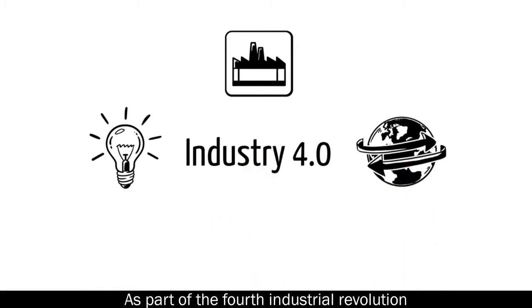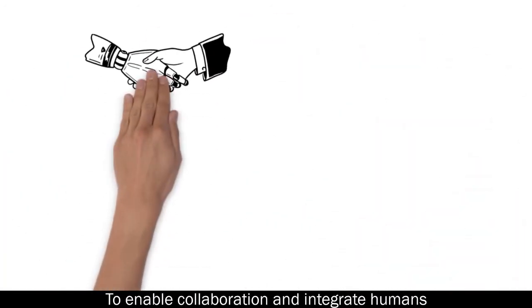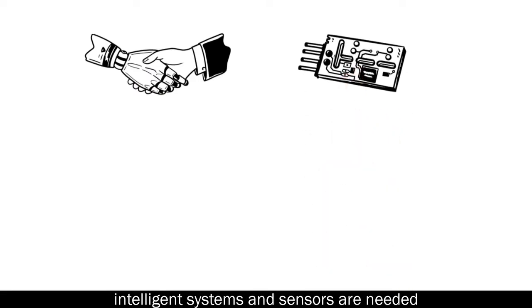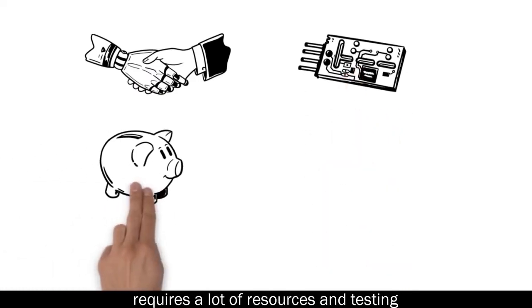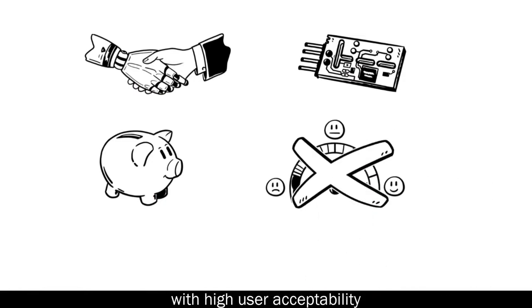As part of the fourth industrial revolution, a new possibility for production was introduced: human-robot interaction. To enable collaboration and integrate humans into these smart surroundings, intelligent systems and sensors are needed. The development of such systems requires a lot of resources and testing, yet this does not guarantee a system with high user accessibility.